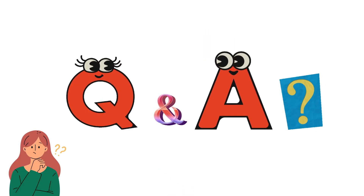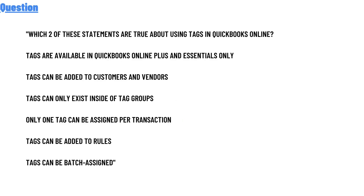Today's question is: which two of these statements are true about tags used in QuickBooks Online? Tags are available in QuickBooks Online Plus and Essentials only. Tags can be added to customers and vendors. Tags can only exist inside tag groups. Online only one tag can be assigned for transactions. Tags can be added to rules. Tags can be batch assigned.